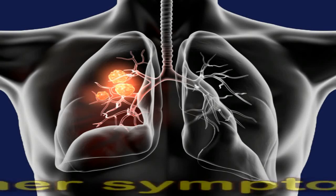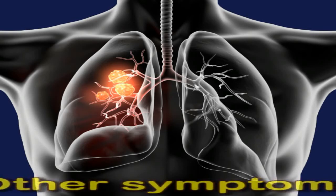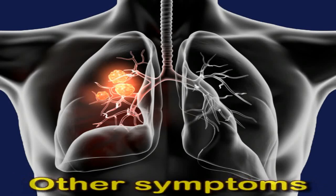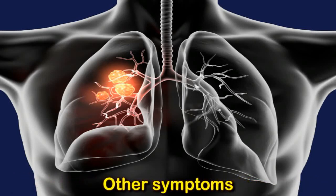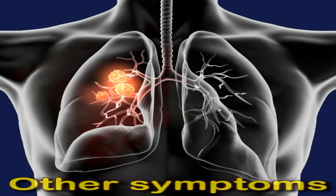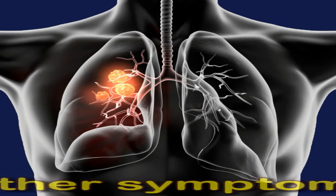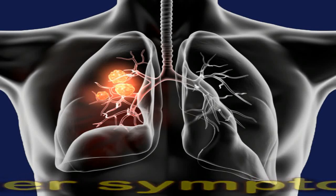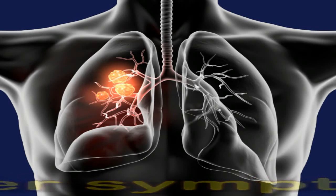Non-small cell lung cancer is the most common type of lung cancer. Other symptoms include a persistent cough, coughing up blood or rust-colored mucus, hoarseness or wheezing, unexplained weight loss, breathlessness, fatigue and weakness, and long-term infections of the chest or respiratory system such as pneumonia or bronchitis. Shoulder pain is rare in people with lung cancer.